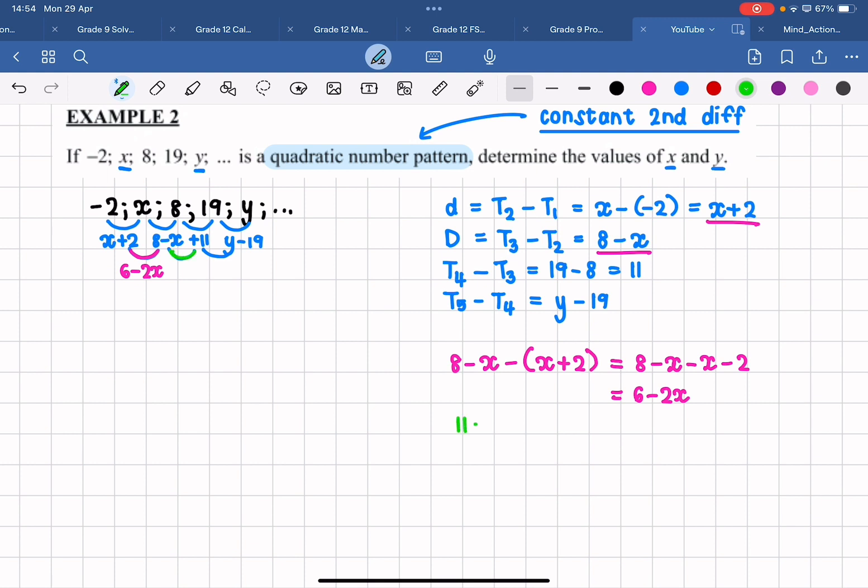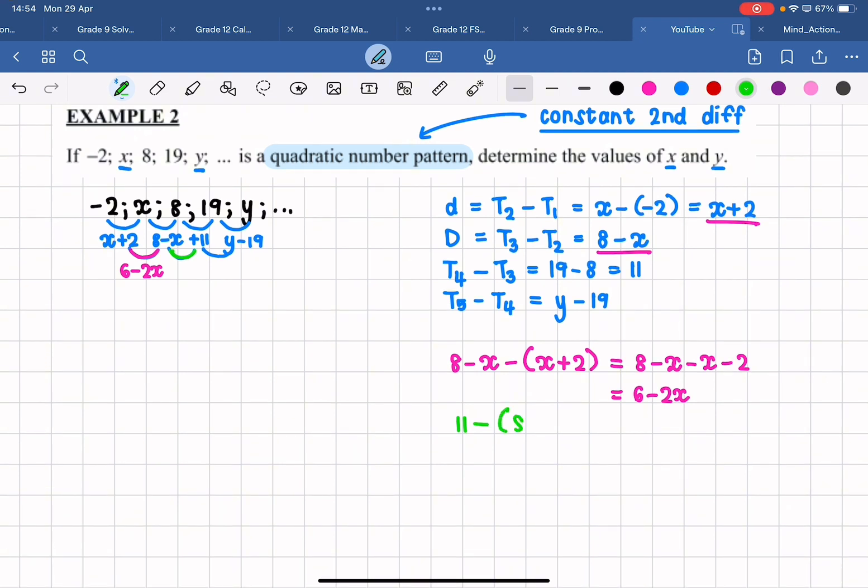I need to take 11, which is my third first difference, minus eight minus x, which is my—sorry about that—minus eight minus x, which is my second first difference. So I'm going to say 11 minus eight plus x, so that is going to give me an answer of 3 plus x. So that is my second second difference.